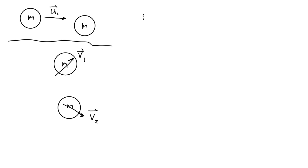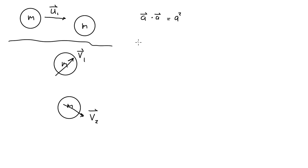The hint given is that for any vector a, the dot product of a with itself equals the magnitude of a squared. The key here is that this is an elastic collision, and the condition that is always true for an elastic collision is that kinetic energy is conserved.